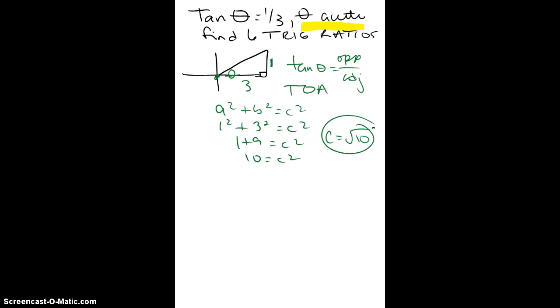So c equals the square root of 10. Now, 10 doesn't simplify. If it were like the square root of 8, we'd put 2 radical 2. So now we have all our sides, I'm going to put my square root of 10 there, and now we can figure out our trig ratios.